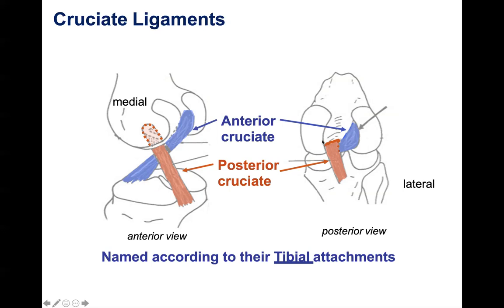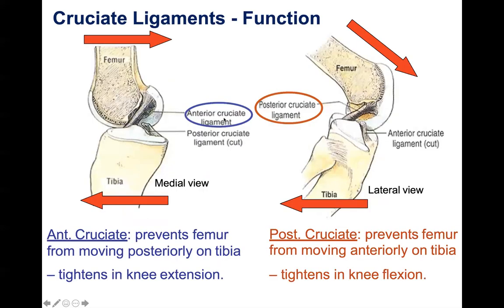The posterior cruciate ligament arises from the posterior medial aspect of the femur and moves posteriorly to attach to the tibia — hence its name, posterior. Now we're going to talk about function, which puts everything together. I could talk about anatomy all day, but in my opinion you cannot complete anatomy without talking about why we have certain things.